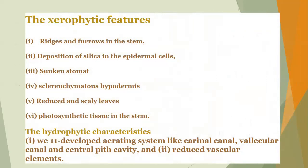Xerophytic adaptations shown by Equisetum include: ridges and furrows in the stem, deposition of silica in epidermal cells, sunken stomata, sclerenchyma in hypodermis, and reduced scaly leaves with photosynthetic tissue in the stem. Hydrophytic characters include the aerating system — carinal canal, vallecular canal, and central pith cavity — and reduced vascular elements.